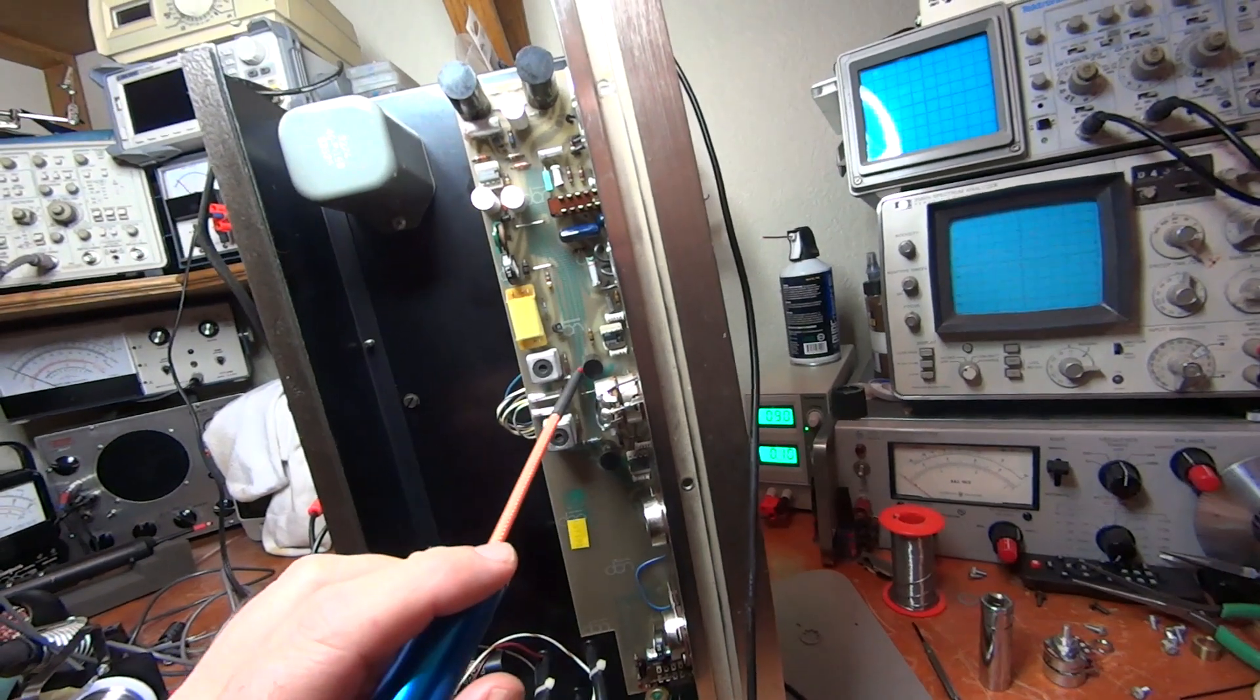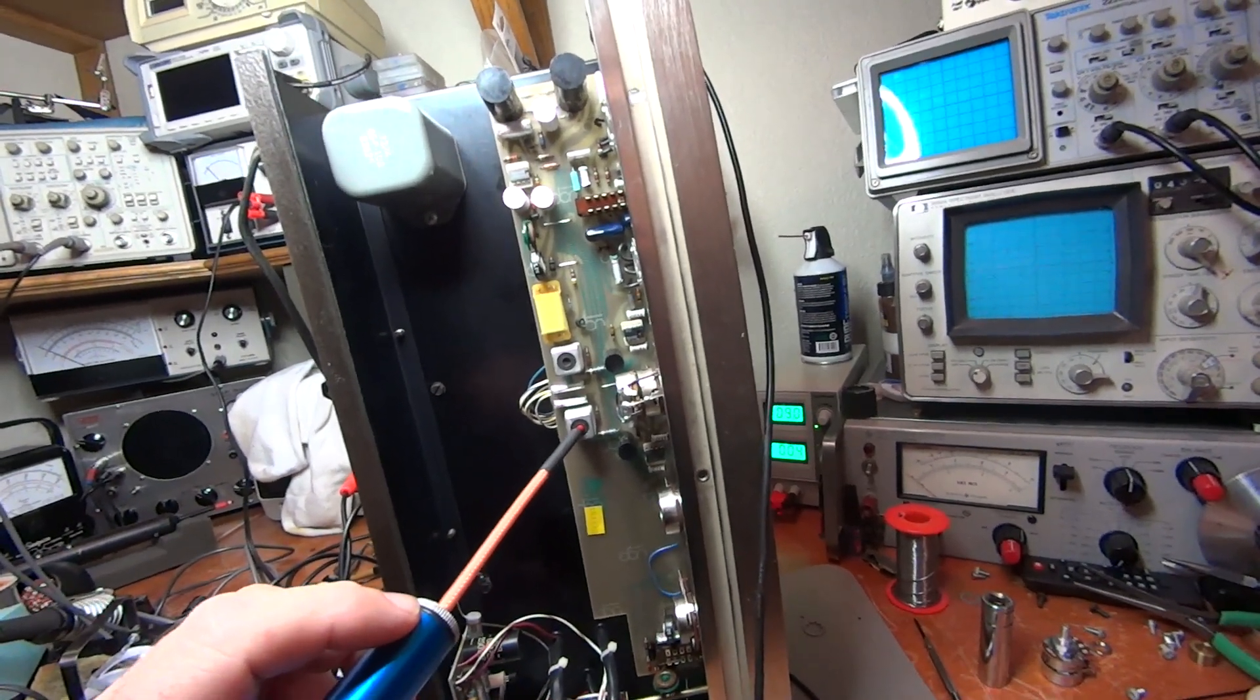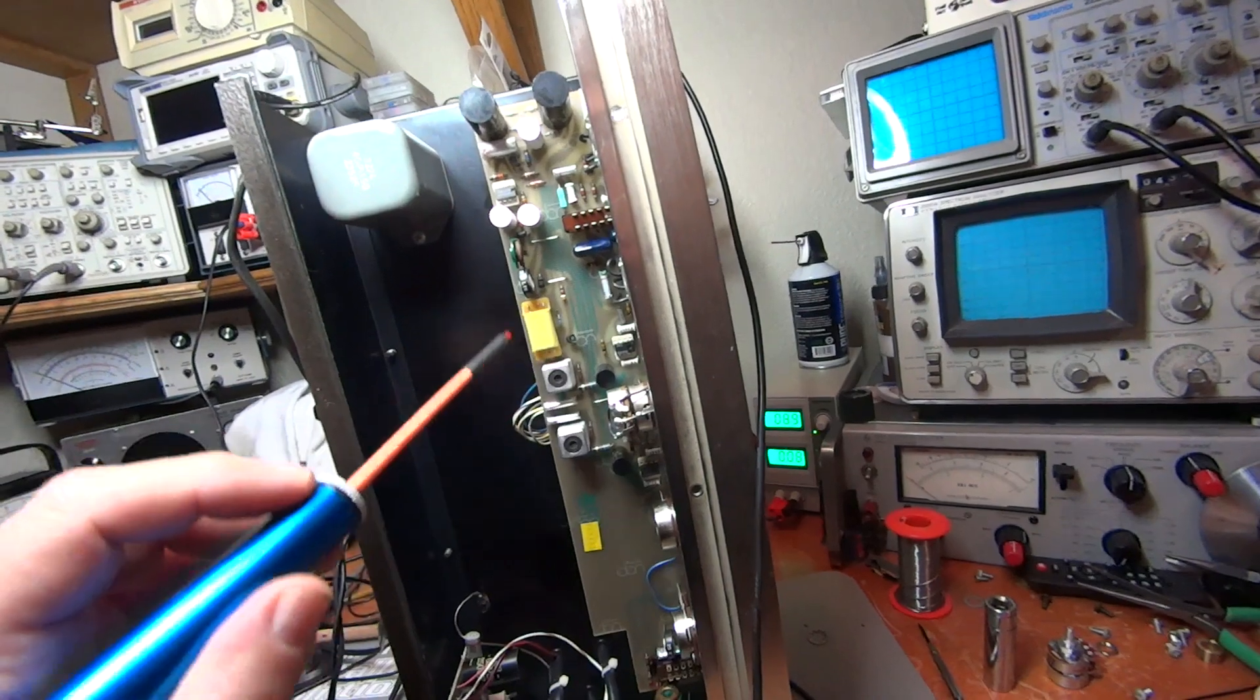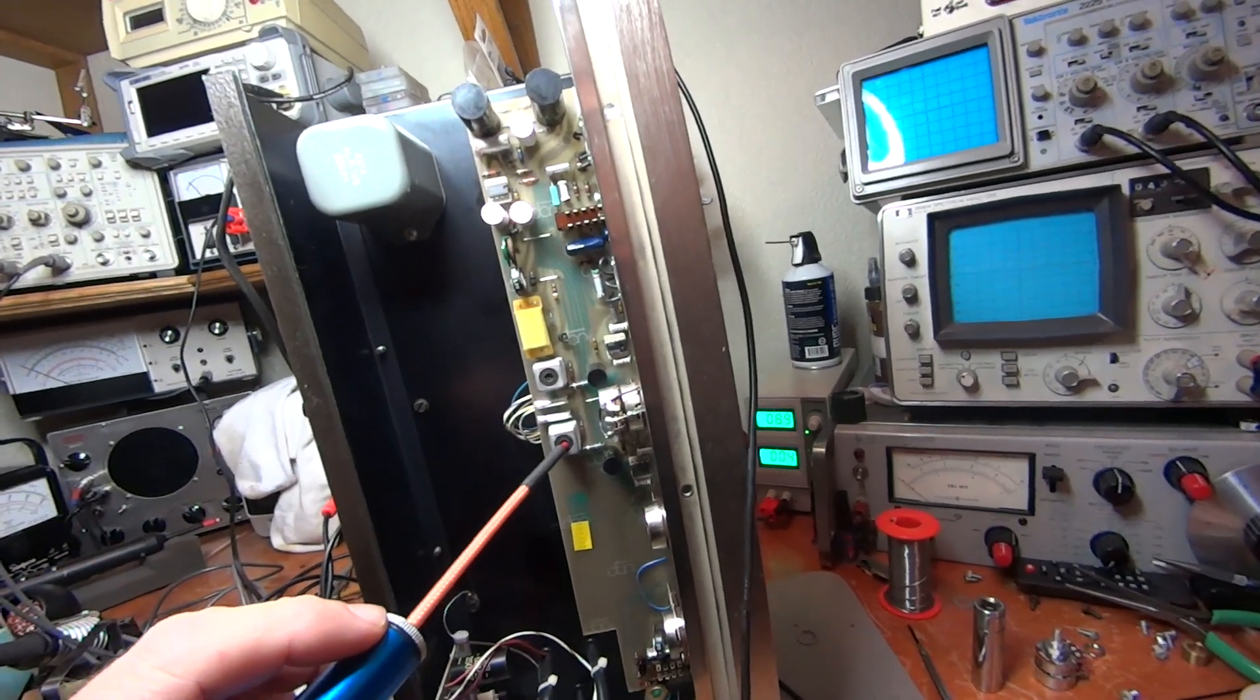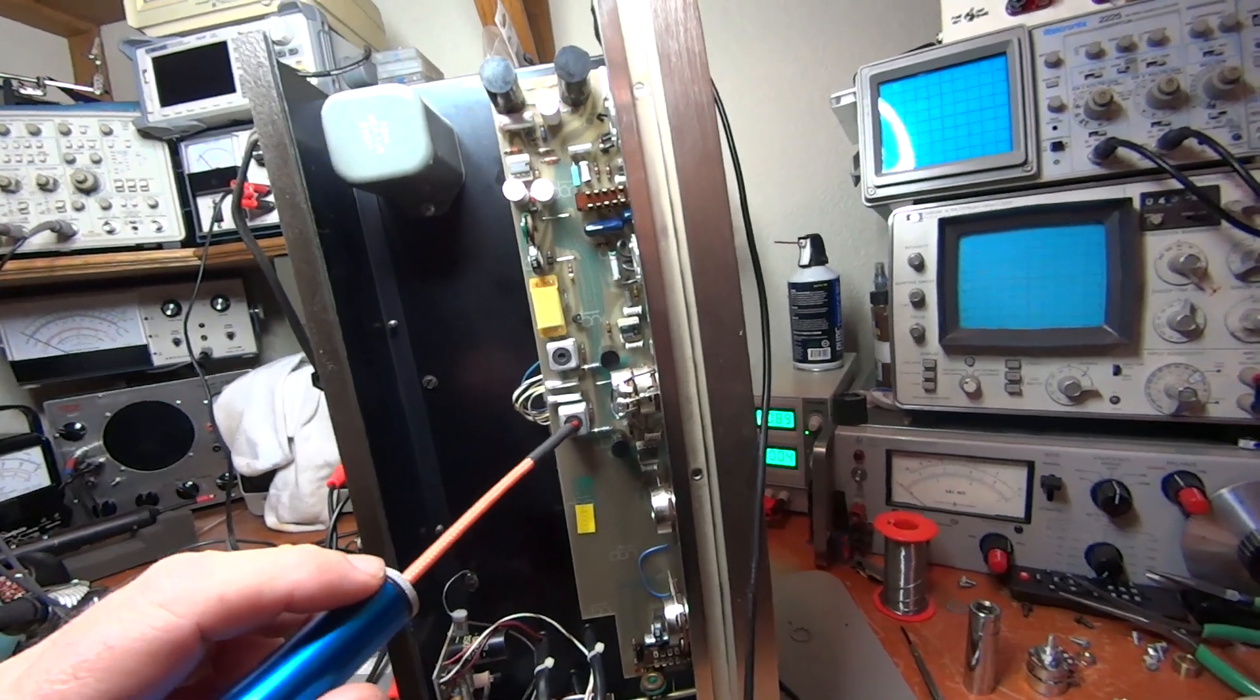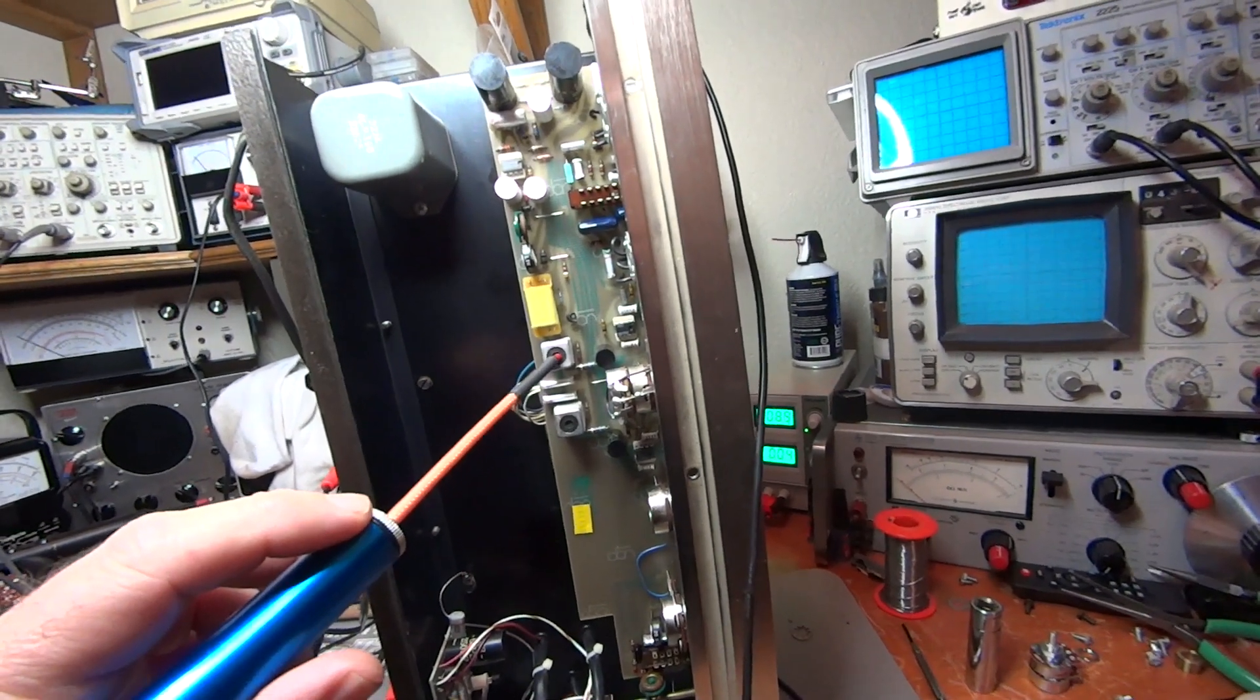Look at that, we've got signal on those two. Then we'll take a look at these inductors. Uh-oh, look at that - the output inductor has no signal on it. And there's no signal on the relay. So here we are, this relay right here is dragging all of that signal to ground.